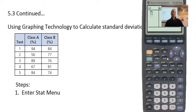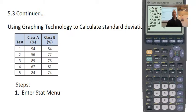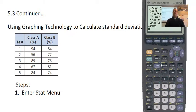So again: stat menu, enter to get to your lists, plug in your numbers — number, enter, number, enter. Then hit stat again. You don't want the Edit menu; you want the Calculate menu. We're going to do one-var stats, hit enter, and then tell the calculator which list to draw from using second function and the list number. You should get that results screen.